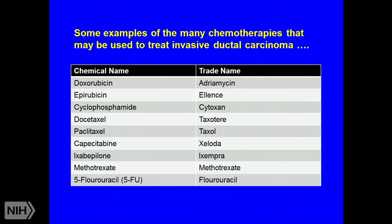These are some examples of chemotherapies used to treat invasive ductal carcinoma. The first three are alkylating agents; docetaxel and paclitaxel are microtubule inhibitors; the rest are anti-metabolites. They have different mechanisms and we combine them based on those different mechanisms.